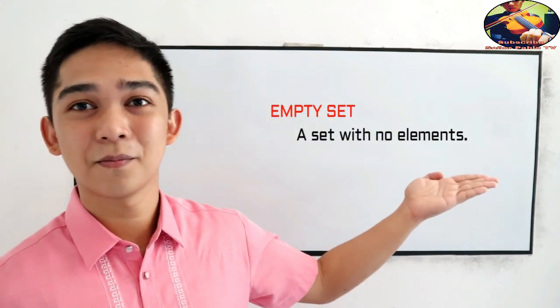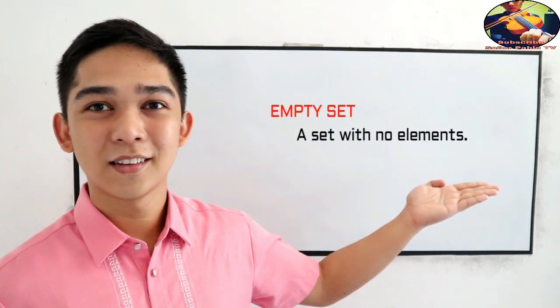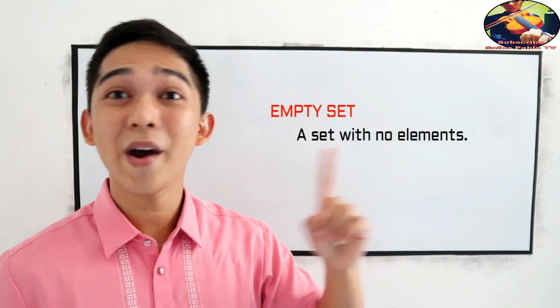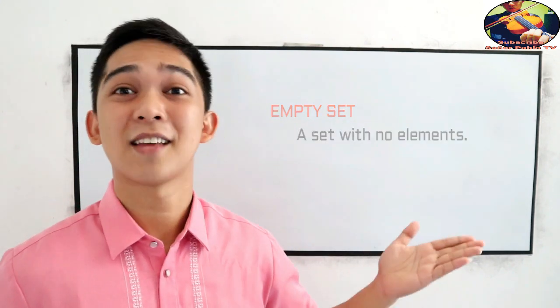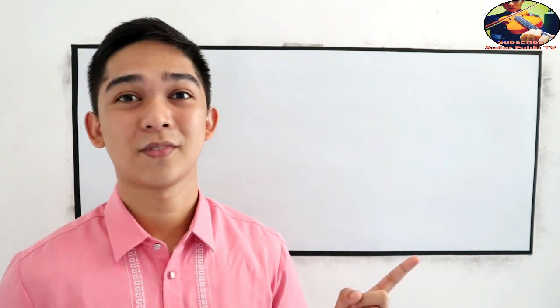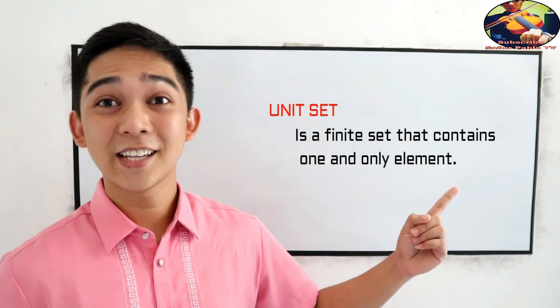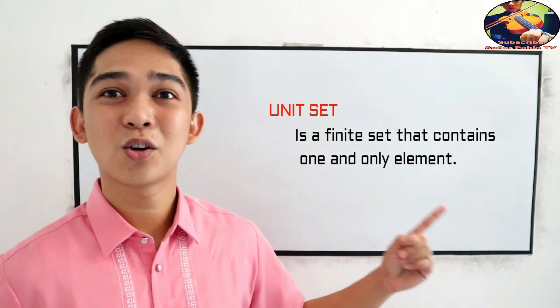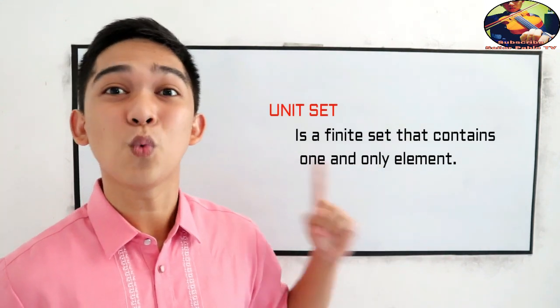Third we have the empty set. That means there is no element in a given set. And fourth we have the unit set. A unit set is a finite set that contains one and only one element.